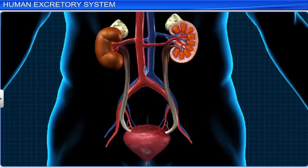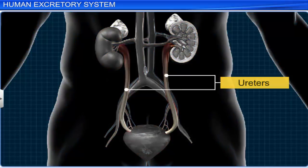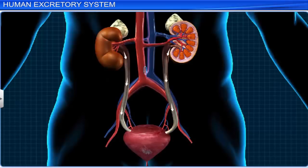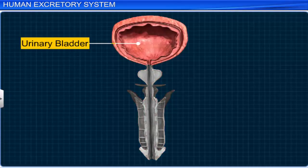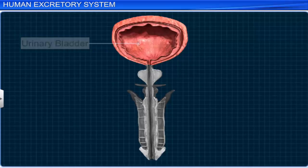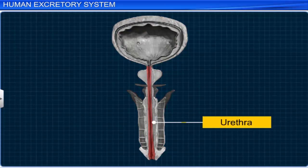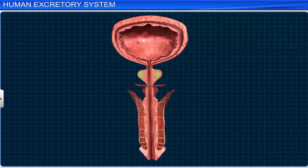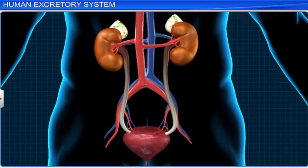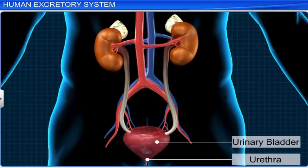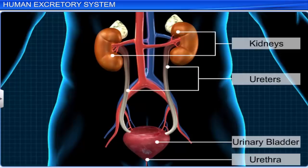The kidney opens into the ureters through the renal pelvis. Each ureter is about 25 cm long and carries urine from the pelvis of the kidneys to the urinary bladder. The urinary bladder is a hollow, muscular and elastic organ that temporarily stores urine till it is released from the body. Urine leaves the urinary bladder via the urethra, a tube through which urine is discharged. The urethra is enveloped by the urethral sphincter, which controls the flow of urine from the bladder to the outside. Hence, the urethra, along with the urinary bladder, ureters, and kidneys, constitute the human excretory system.